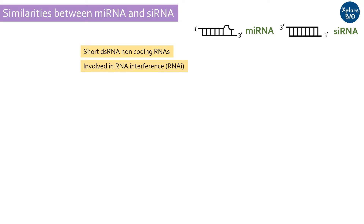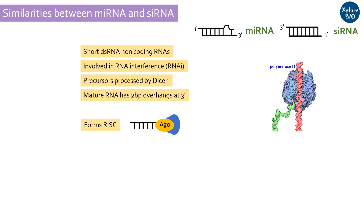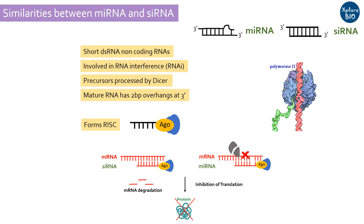Within an organism, both miRNA and siRNA precursors are synthesized by RNA polymerase II. Both these precursors are processed by Dicer, which is an endoribonuclease class III, leaving two-base pair overhangs at the three-prime ends. These overhangs allow the RNA to bind with the Argonaute protein, forming a RISC or RNA-induced silencing complex. Upon association with RISC, both these RNAs result in gene silencing. Due to these similarities, people often get confused between the two.